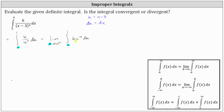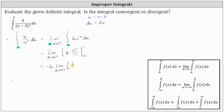The next step is to find the antiderivative with respect to u. We have the limit as a approaches zero from the right of six times u to the power of negative one divided by negative one, with limits of integration from a to one. Six divided by negative one is negative six, so let's factor out the negative six. We have negative six times the limit as a approaches zero from the right of u to the power of negative one, which is one divided by u.